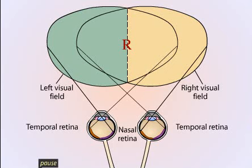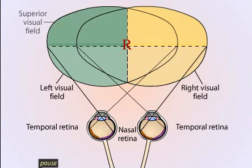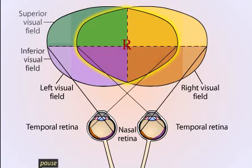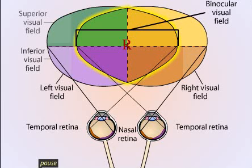The visual field can also be divided vertically into superior and inferior divisions. Note that the visual fields of both eyes overlap extensively in the central portion of each visual hemifield. This region defines the binocular field of view. Vision in the periphery of the field of view is strictly monocular, mediated by the most medial portion of the nasal retina.